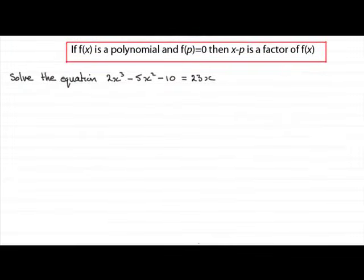Hi. In this tutorial I want to show you how we go about solving cubic equations. And I've got one here: 2x cubed minus 5x squared minus 10 equals 23x.